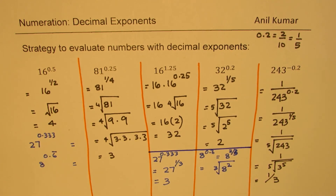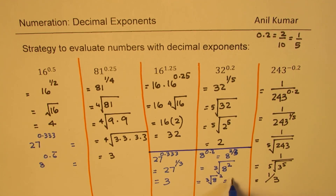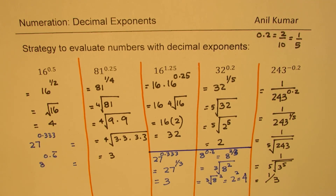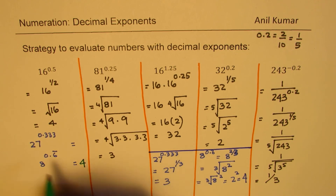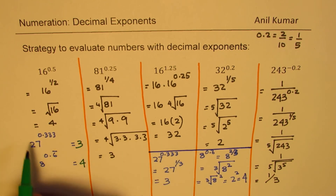We can also think of it as: cube root of 8, then square it. The cube root of 8 is 2, and 2 squared is 4, so the answer is 4. So for 8 we get 4 and for 27 we got 3. That is how you solve problems with recurring decimal exponents.